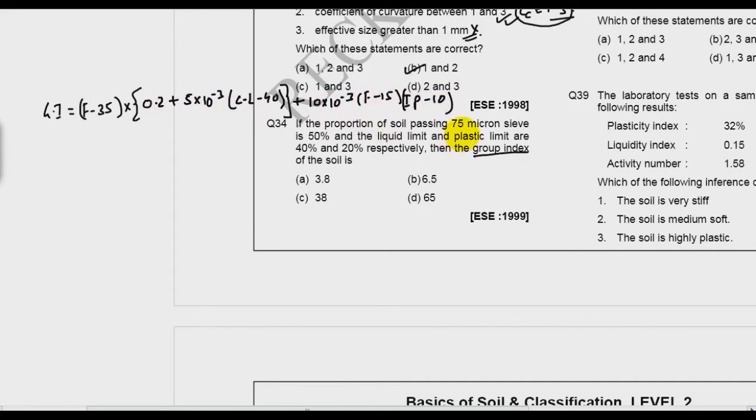Now what is F here? F is the percentage finer than 75 micron. So F is equal to 50. This is liquid limit, so liquid limit is given as 40 and plasticity index IP is given as 20. Now keep in mind one very important thing which most students miss: these brackets have minimum value of 0 and maximum value of 40. This bracket has minimum value of 0 and maximum value of 20.